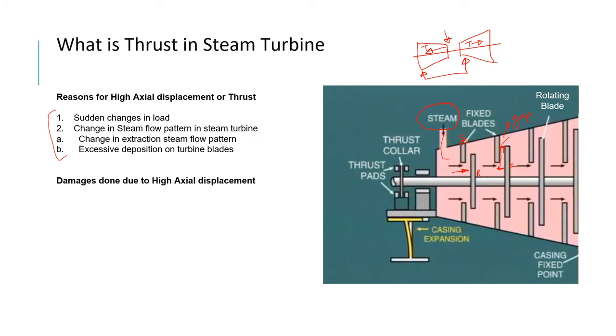Let's say you have a very sudden change in load. Already let's say 100 tons of steam was flowing and system was stable. Suddenly it got reduced to 10 tons. The tendency was to have much force on this side, but suddenly the force reduced. So it may have a chance suddenly to come back on this side. This kind of situation may give you a reading on thrust which may be temporary also.